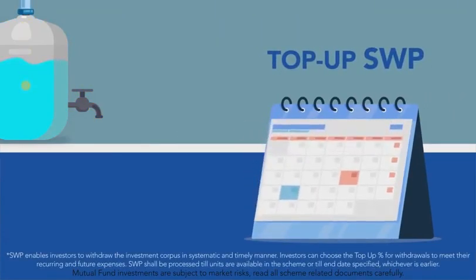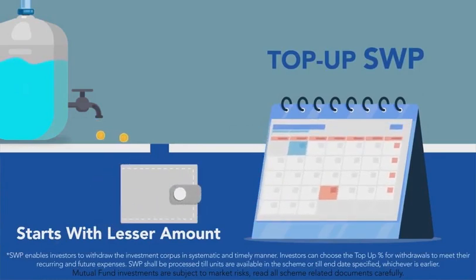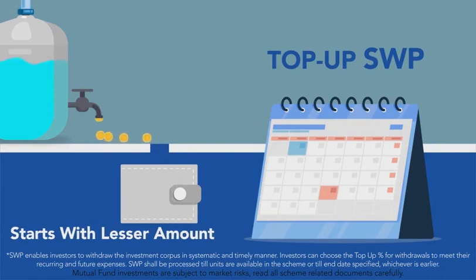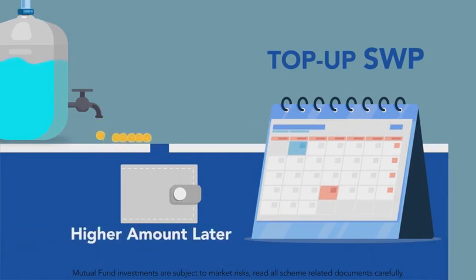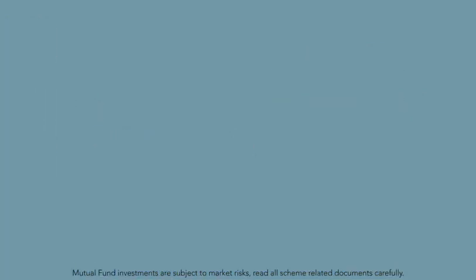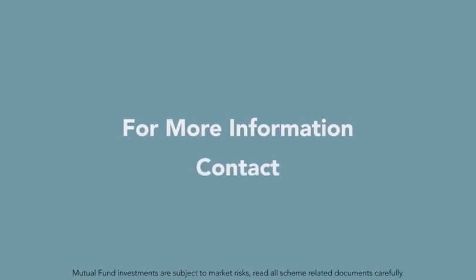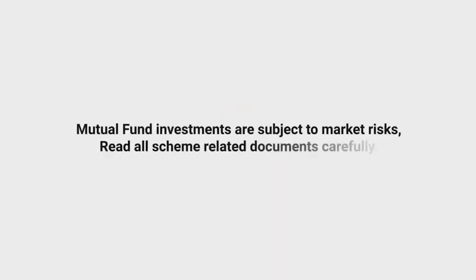Moreover, go for a top-up SWP, which increases the payout every year. It starts with a lesser amount, allowing you to create a good buffer in the water tank and your portfolio, so that you can withdraw higher amounts later.